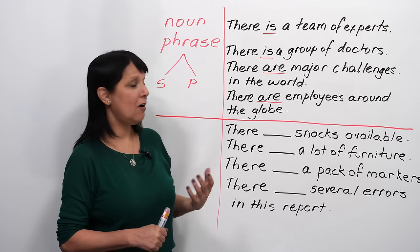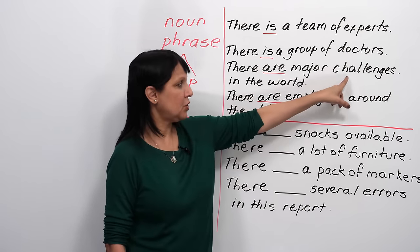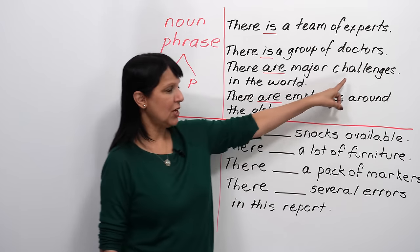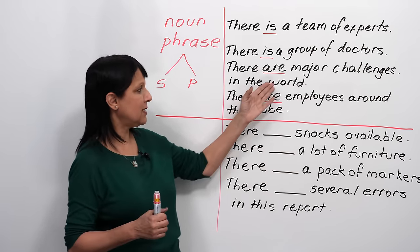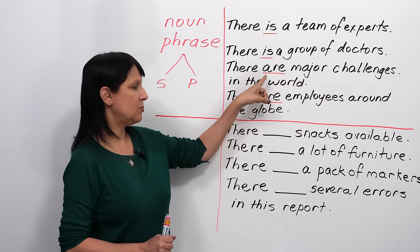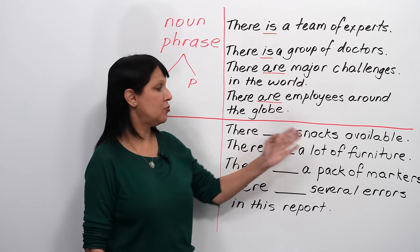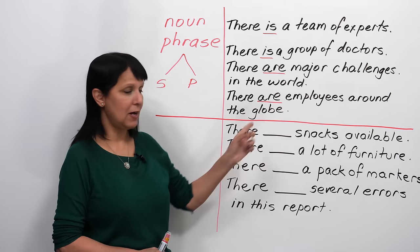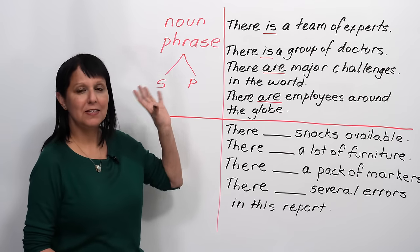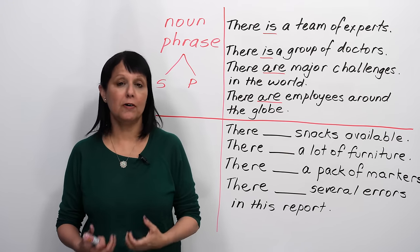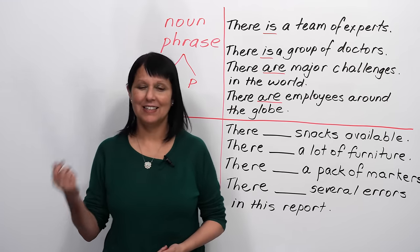'There are major challenges in the world.' How do we decide it's 'are'? Is it because of 'challenges' or 'world'? It's because of 'challenges' — 'in the world' is just a prepositional phrase that doesn't affect the verb. Likewise, 'there are employees around the globe' — 'around the globe' doesn't matter; what matters is 'employees,' which is plural. This is really important if you're doing the IELTS or TOEFL, or writing business letters.